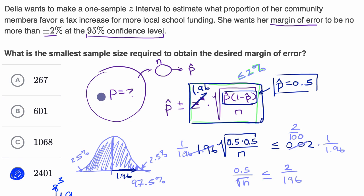It might turn out that her margin of error, when she actually takes the sample of size 2,401, if her sample proportion is less than 0.5 or greater than 0.5, well then she's going to be in a situation where her margin of error might be less than this. But she just wanted it to be no more than that.